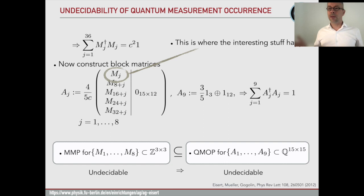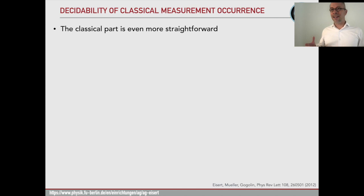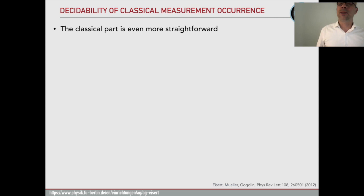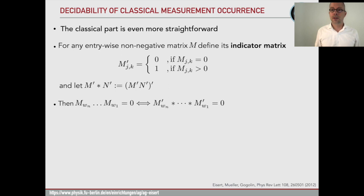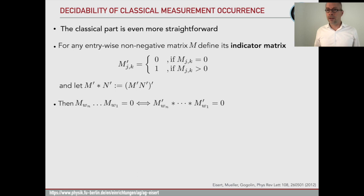The classical case is even more straightforward but also interesting. We have products of matrices with non-negative entries, and we can simplify by replacing entry-wise non-negative matrices by their indicator matrices — entries are zero if the original entry is zero, one otherwise — indicating whether there is something in each matrix position. We then define a product of indicator matrices, and the insight is that the product of these non-negative entry matrices is zero exactly if the product of the respective integer indicator matrices is zero. This reduces the problem to a combinatorial one.